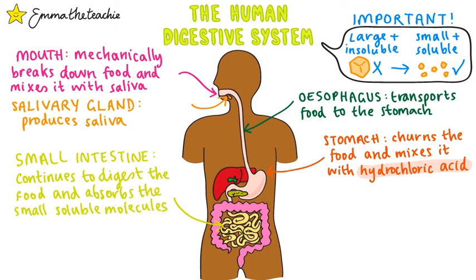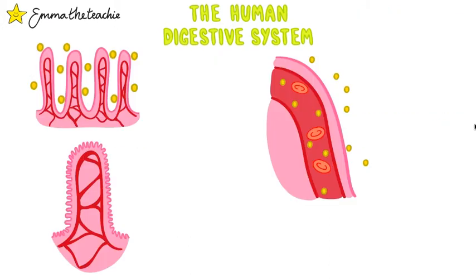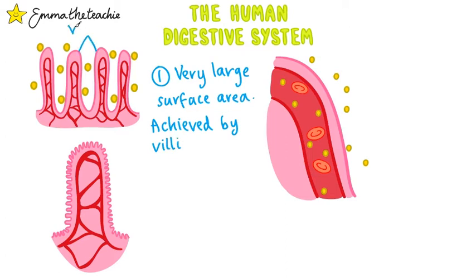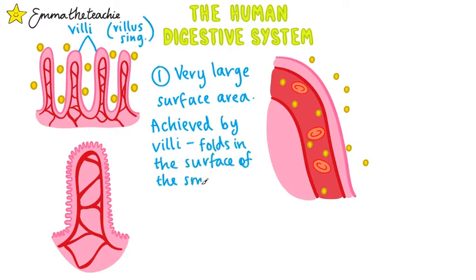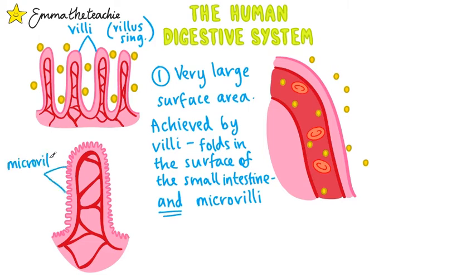We're going to take a minute to see how the small intestine is adapted for its function, as this is one of the exchange surfaces you need to know. There are three main adaptations to learn. Firstly, the small intestines have a very large surface area, achieved by having villi. If you zoom in on the small intestines, you'll see the villi — each one is called a villus. These are folds in the surface of the small intestine. The large surface area is also achieved by microvilli. If we zoom in on just one villus, we can see it's covered in loads of microvilli, and these folds really increase the surface area.